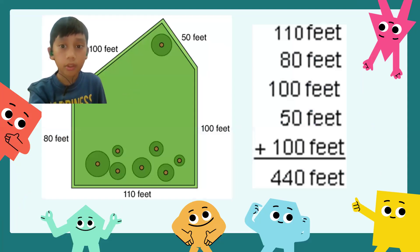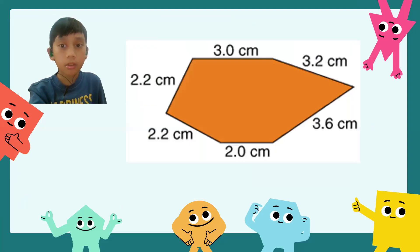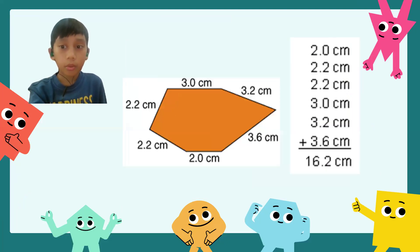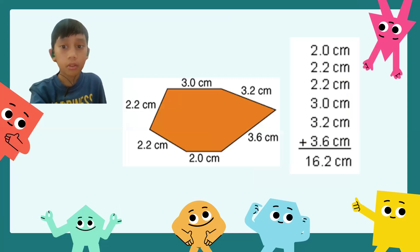Here is another example. What is the perimeter of the polygon shown below? To find the perimeter, we will add the length of each side. The figure is a hexagon, so there are six sides to add. We add all the side lengths, making the sum of 16.2 centimeters.